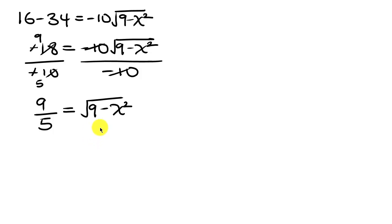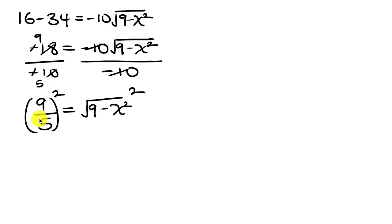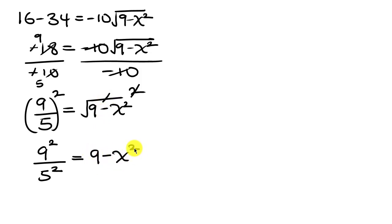Our next step is to get rid of the square root by squaring both sides. The left hand side is the same as 9 squared over 5 squared, and the square cancels out the square root on the right, leaving 9 minus x squared. So 81 over 25 equals 9 minus x squared.